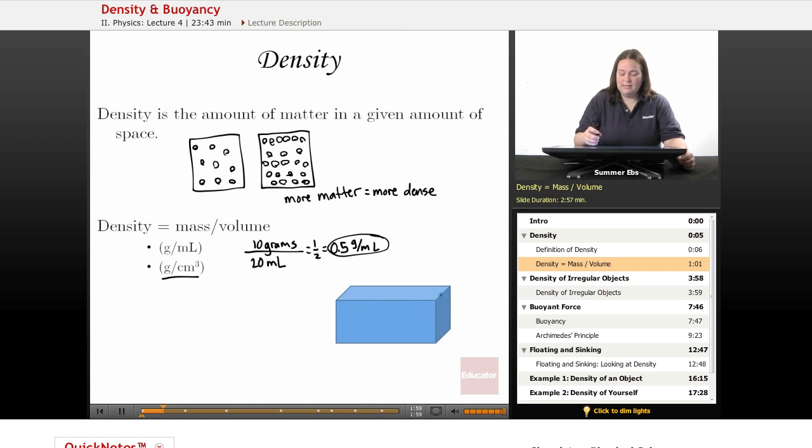If we were to measure the density of this box, this nice blue box right here, what we would need to know is how to find the volume of that. For any rectangular box, you do length times width times height. Let's say the length is 10 and the height is 5 and the width is 4.